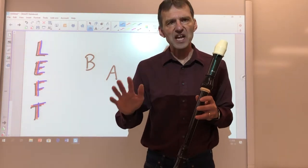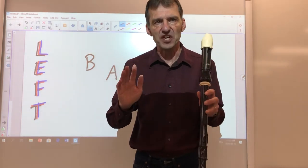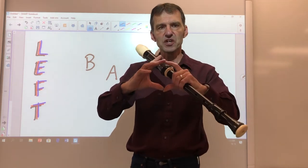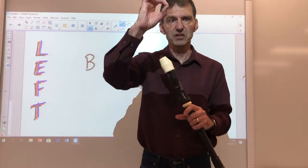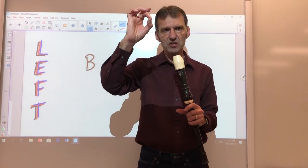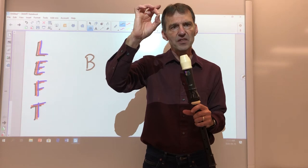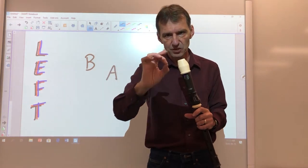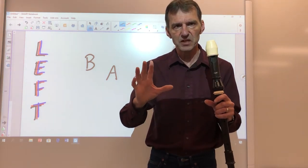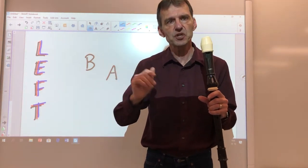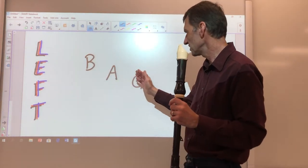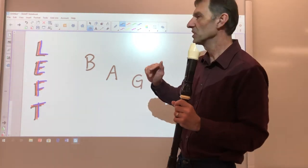Now when we start showing a thing called the staff on the board, the staff is nothing more than a picture of those sounds. Circles on the staff are going to show you where the sound is going. The high sound will show a circle in a higher place on the staff, and G, which is a lower sound, will be lower down on the staff. Any of this from here on is just showing you where your sound is going.